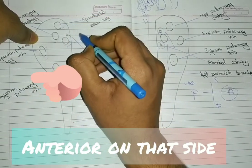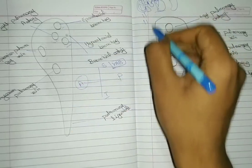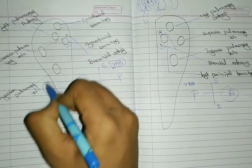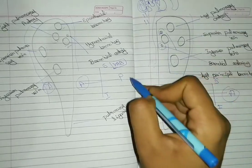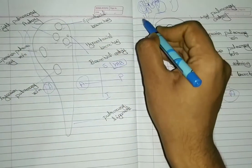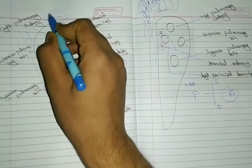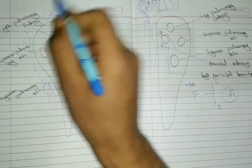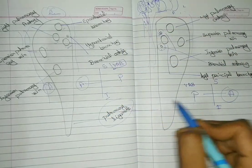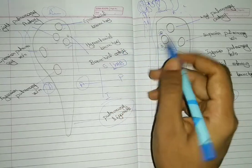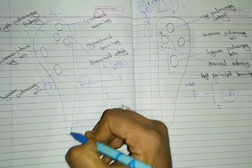Posteriorly, the Vagus nerve is in relation here. The phrenic nerve is anteriorly. On the left side, the descending aorta and the superior arch of aorta are in relation posteriorly. Veins are in relation with the right lung and arteries are in relation with the left lung, so the arch of aorta is here on the left side.